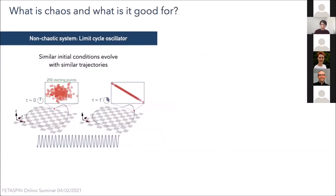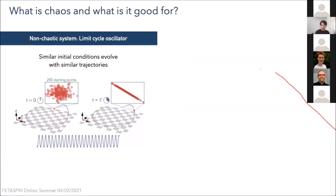So what is chaos and what is it good for? A good starting point would be to consider something that is not chaotic — a limit cycle oscillator. Shown here is a three-dimensional representation of the trajectories of such an oscillator shown in blue. We imagine starting the system with 200 closely spaced initial points, and if the system is non-chaotic, after a certain time t-prime all these points converge onto the steady limit cycle, giving a sinusoidal output.